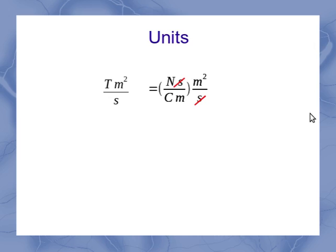Well, you can see pretty quickly that the seconds are going to cancel each other out. Furthermore, the meter on the bottom is going to cancel one of the two meters up on top. And that leaves us with just a Newton meter per coulomb.